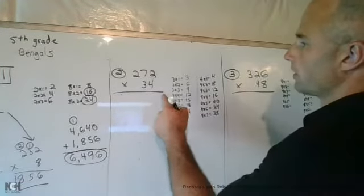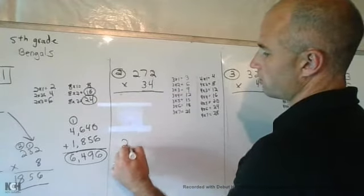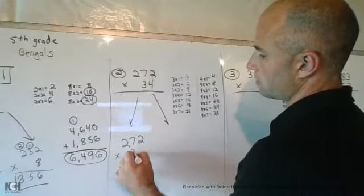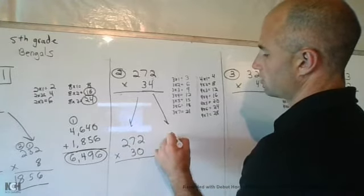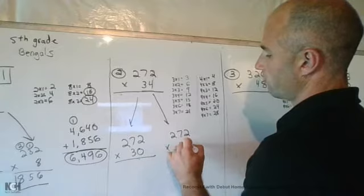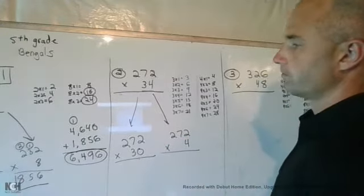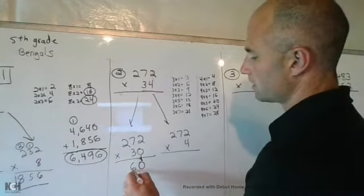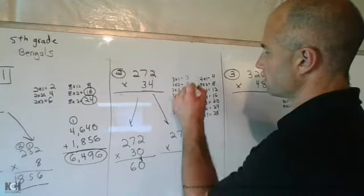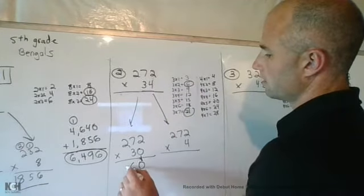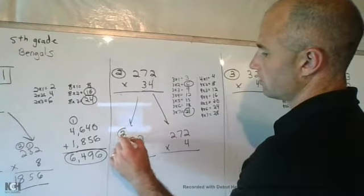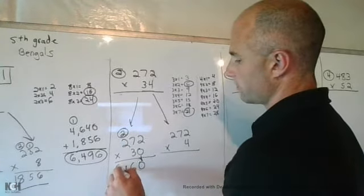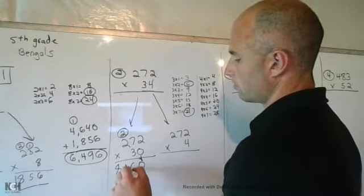So let's get started with expanding the 34, so it's 272 times 30 and 272 times 4. I'm going to bring down that 0 here. 3 times 2 is 6, 3 times 7 gives you 21. Leave the 1, carry the 2. And once again, 3 times 2 equals 6 plus 2 this time gives you 8,160.